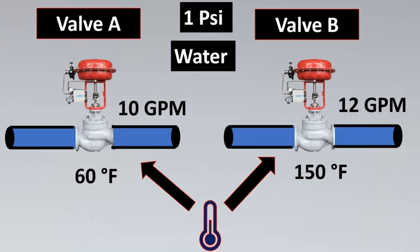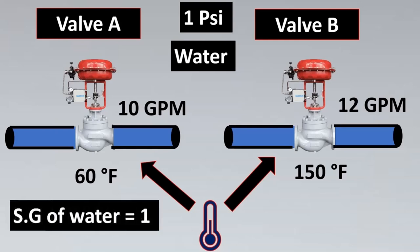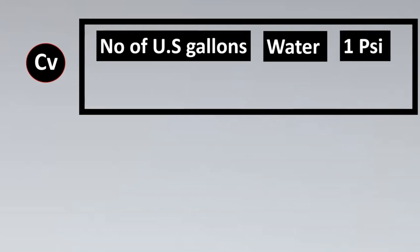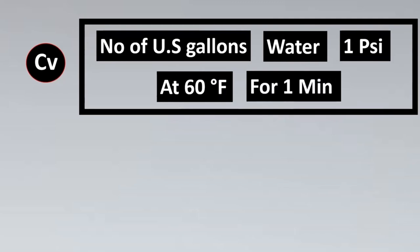We will select 60°F. A lot of people ask why 60°F is specifically taken in the CV definition. The answer is because the specific gravity of water is 1 at 60°F, which helps greatly when doing CV calculations. So we have three standard parameters: pressure drop of 1 PSI, water as the fluid, and temperature of 60°F. With that, the definition of CV is as follows: CV is the number of US gallons of water that can flow through a valve with a 1 PSI pressure drop at 60°F for 1 minute.